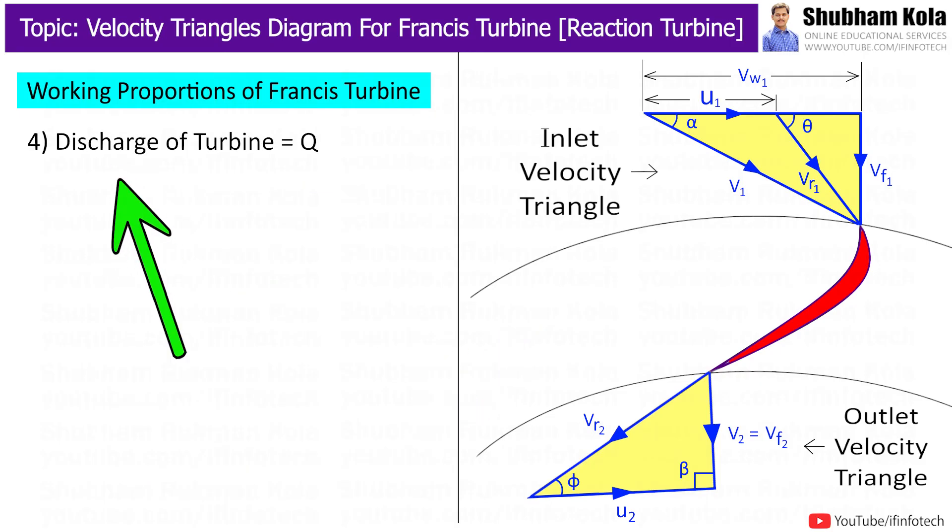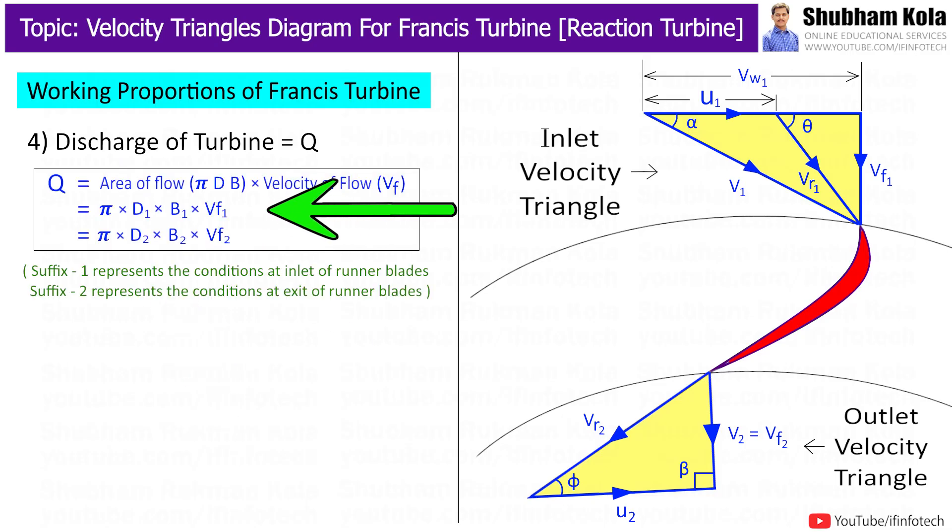The discharge rate through Francis turbine, neglecting thickness of blade is given by this formula where suffix 1 represents the condition at inlet of runner blades and suffix 2 represents the condition at outlet of runner blades.